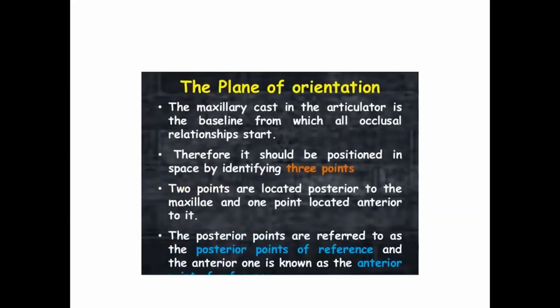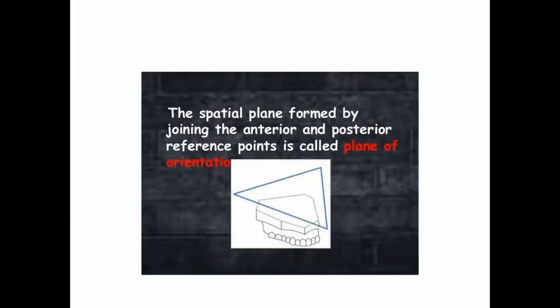Regarding the plane of orientation: the maxillary cast in the articulator is the baseline from which all relationships start, so it should be positioned in space by identifying three points — two posterior points and one anterior point. The two posterior points are on the maxilla, and one point is located anteriorly. The spatial plane formed by joining these anterior and posterior reference points is called the plane of orientation.